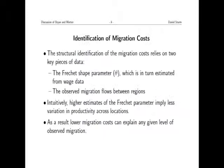Let me look more closely at the key thing the paper tries to do, which is identifying migration costs. How costly are these trade barriers for people moving from where they are born to potentially more productive jobs in another location? The structural identification of migration costs relies on two key pieces of data or parameters. The first is the Fréchet shape parameter theta, which is estimated from wage data. This is very similar to the standard way we infer trade costs for goods in a structural model, where you take a stance on the elasticity of substitution sigma between goods.